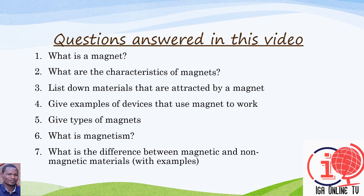Questions answered in this video: What is a magnet? What are the characteristics of magnets? List materials that are attracted by a magnet. Give examples of devices that use magnets to work. Give types of magnets. What is magnetism? What is the difference between magnetic and non-magnetic materials, with examples?